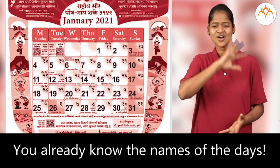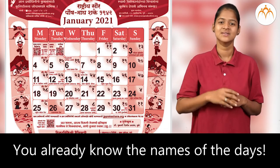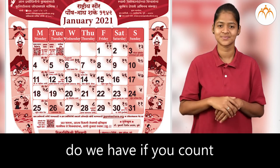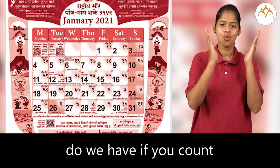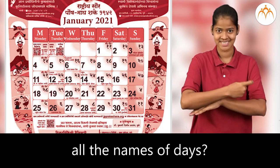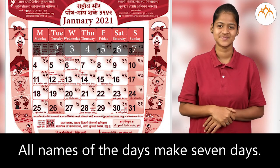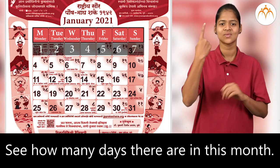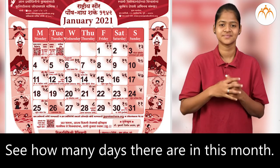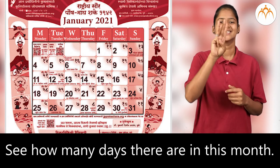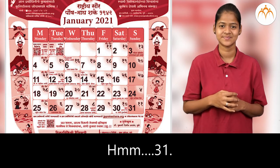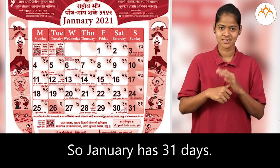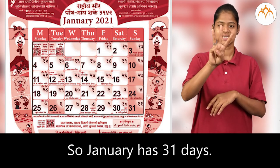You already know the names of the days. How many total days do we have if you count all the names of the days? All names of the days make 7 days. How many days are there in this month? 31. So January has 31 days.